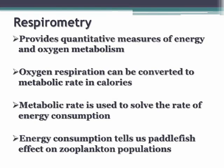We're going to use a respirometer to determine the standard metabolic rate. The respirometer provides a quantitative measure of energy and oxygen metabolism, which we can convert to a metabolic rate in calories. That metabolic rate will then be used to solve the rate of energy consumption, which can tell us the effect that paddlefish have on zooplankton populations.